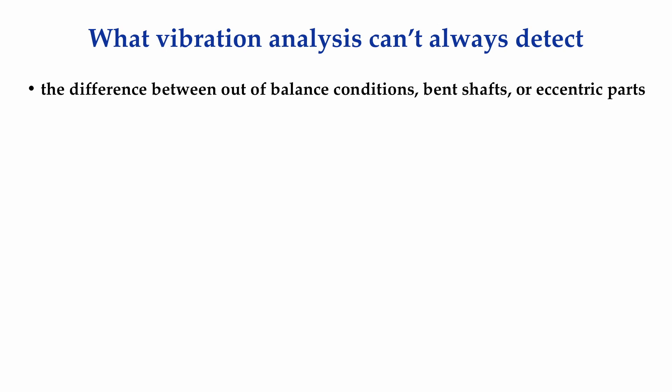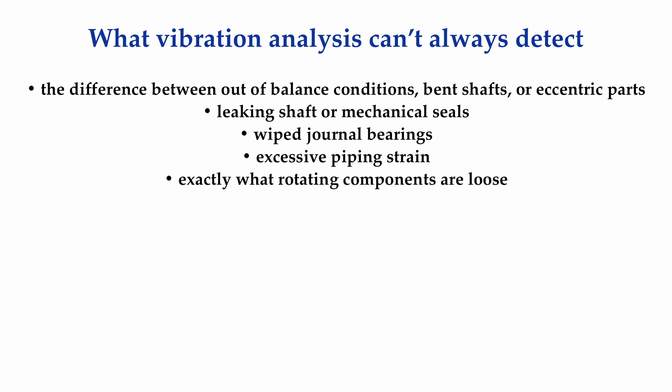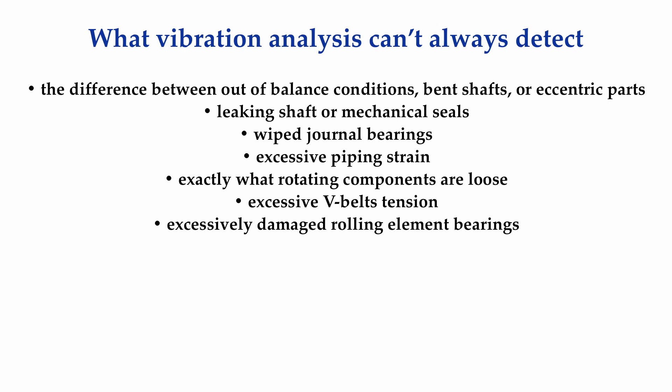It doesn't make much sense trying to balance a rotor that has a permanently bent shaft. Vibration analysis cannot detect leaking bearing seals or leaking mechanical seals, nor can it detect if a journal bearing has mildly wiped. It cannot detect excessive piping strain. It may be able to detect a looseness condition, but it may not be able to tell you what is loose. Vibration analysis cannot tell you if your belt tension is too tight. In some cases, if rolling element bearings have become excessively damaged, like when the balls fall out, vibration analysis is not going to be of much help.